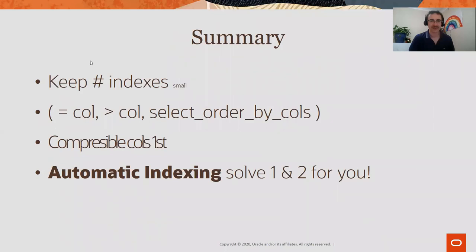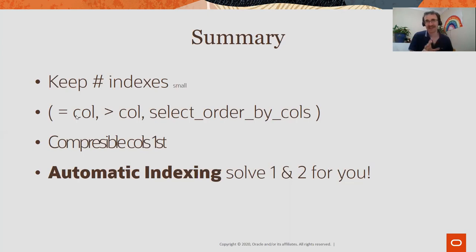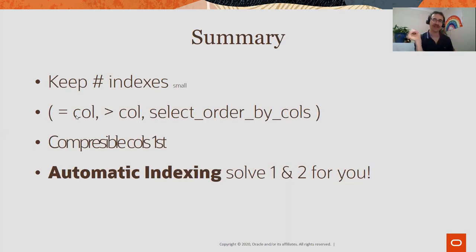Final clarification on column ordering: WHERE clause columns come first — this is the most important consideration. Within that, put columns with equality conditions (column = value) first, then range conditions (greater than, less than). For example, if you have 'customer_id = X' and 'order_date > sysdate - 7', put customer_id first because the equality condition pinpoints an exact section of the index, making the range scan on date much more efficient.